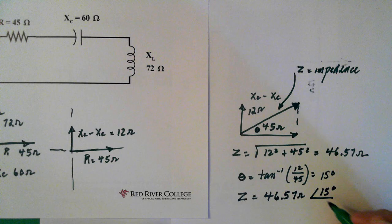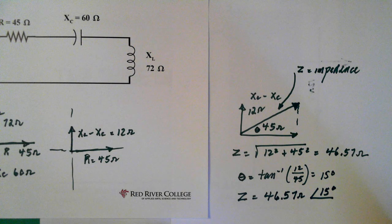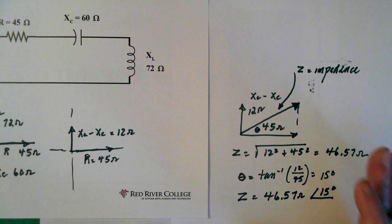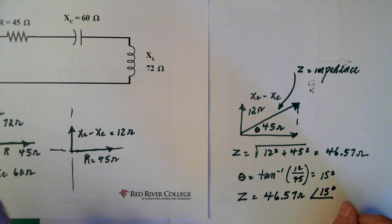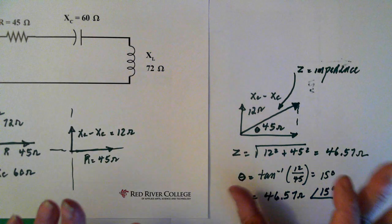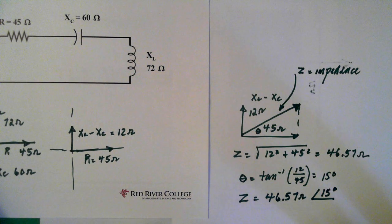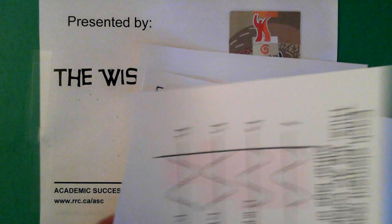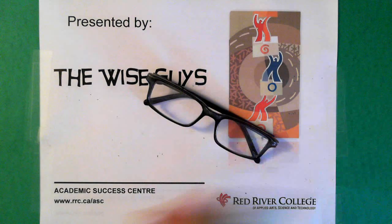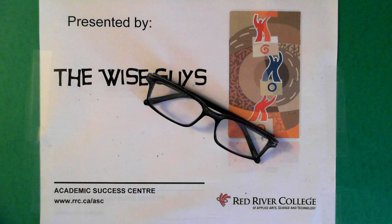So our impedance then for this circuit is 46.57 ohms, angle 15 degrees. And depending on your instructor, you might need to have more digits in there. I was just being a little bit lazy. And that's basically solving for your impedance. If you had more information here, you could solve for other things, but I just wanted to give you an idea of what you'd be looking at in the beginning. This video has been brought to you by Wise Guys. I hope you have a super day. Take care.